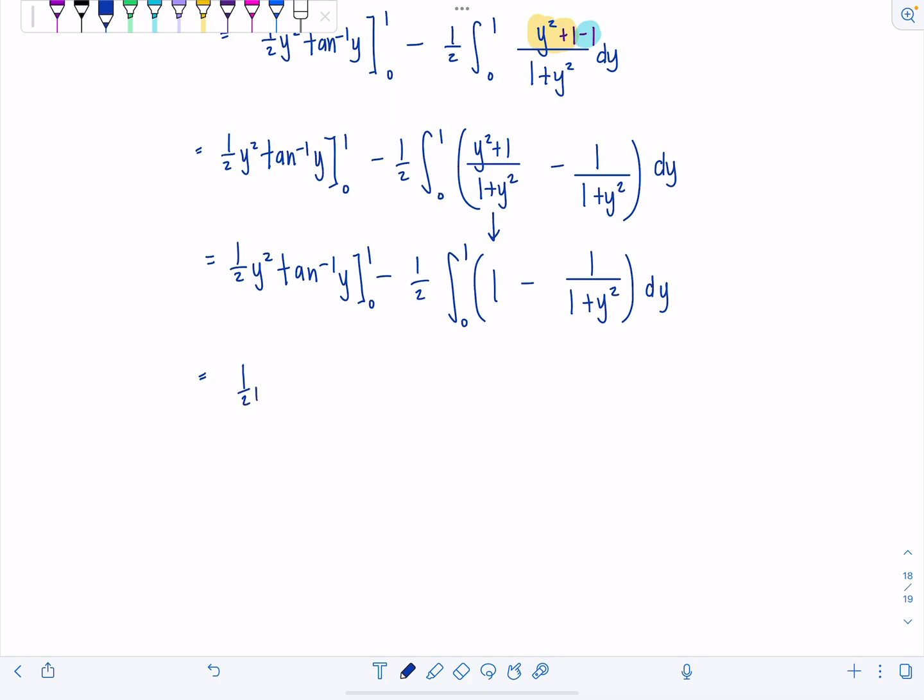So we've got 1 half y squared tan inverse of y minus 1 half. So anti-derivative of 1 is just y minus anti-derivative of 1 over 1 plus y squared would be tan inverse of y.